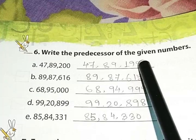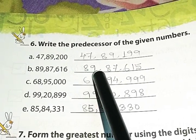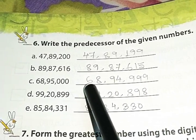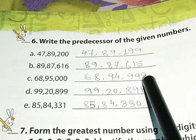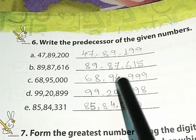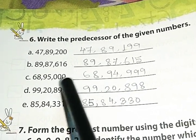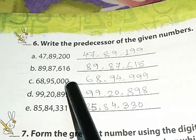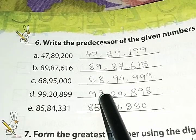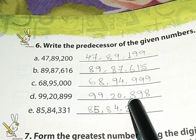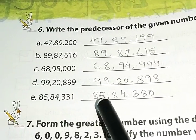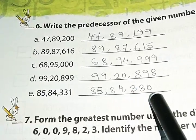That is why the answer will be this. Again, second answer, 89,87,615. Again, 68,94,999. In case of that, when we add 1 with 94,999, then we will get 95,000. That is why this is the answer. Next, 99,20,898. And last one, 85,84,330.